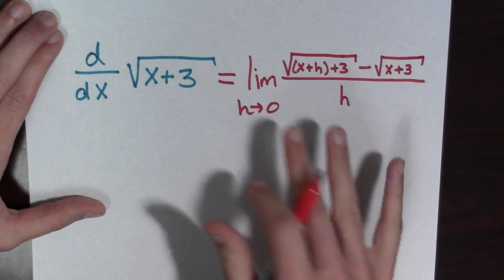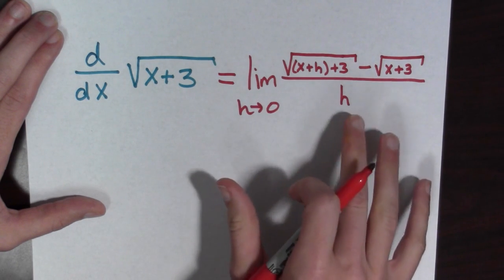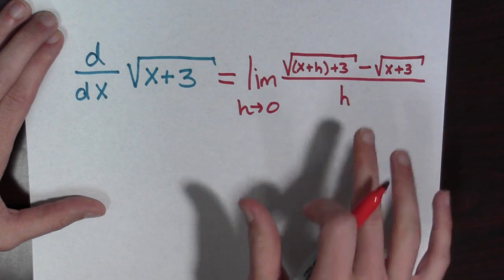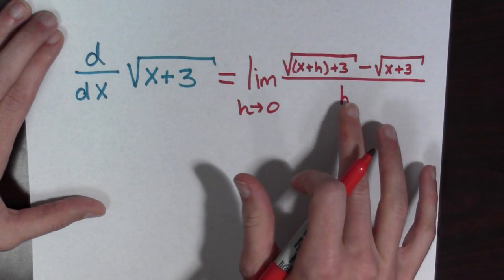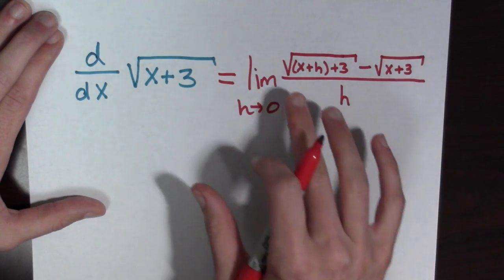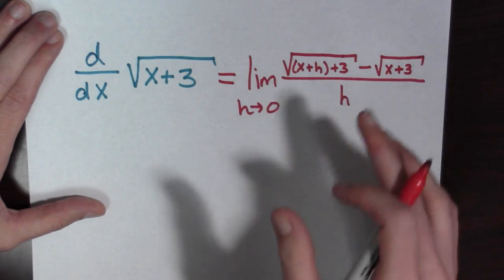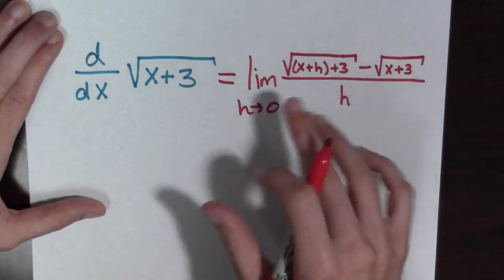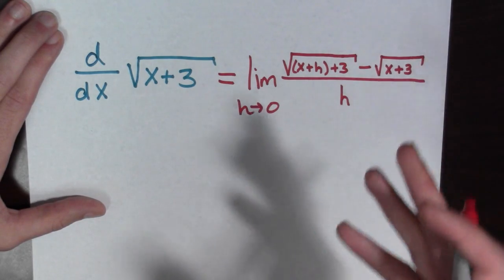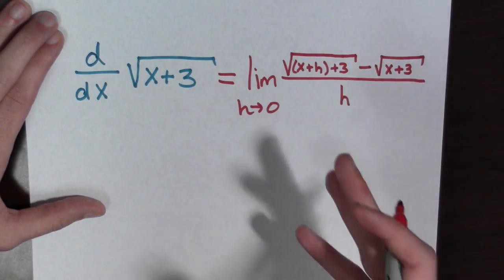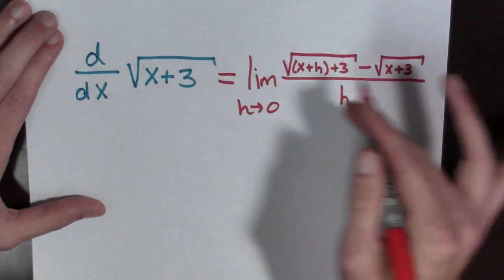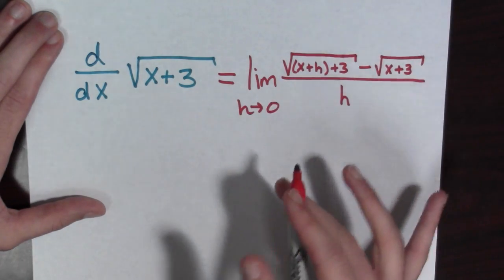But what do we do with this? Because look, in this limit, the denominator is going to 0. What's the numerator doing? The numerator is going to 0 too. So we have a limit of a fraction where the numerator and the denominator are both going to 0. We have to be able to simplify this.